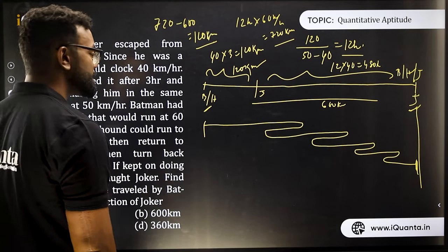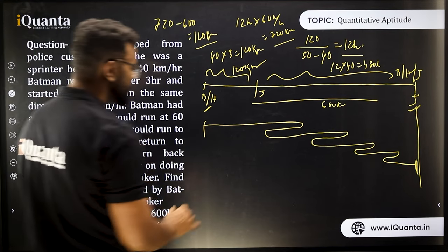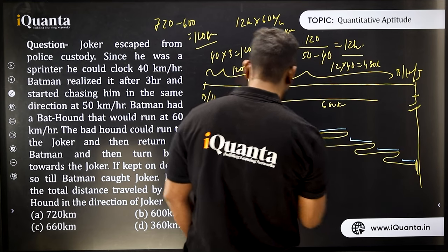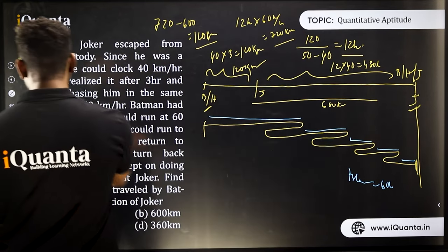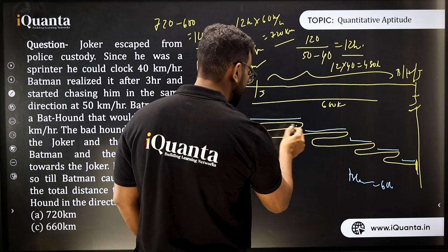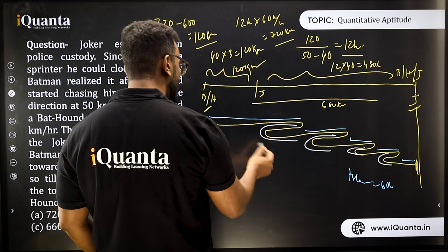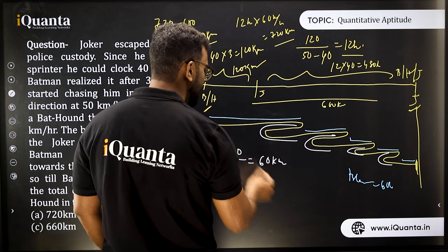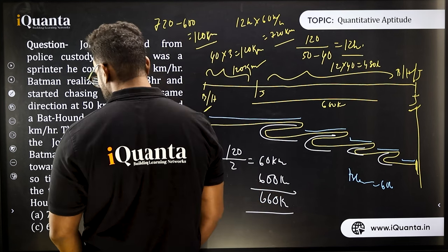Now let's analyze the remaining 120 km. The blue portions in the diagram represent all the forward segments of the hound, which sum to 600 km. The remaining 120 km consists of the back-and-forth segments. Each round-trip within this portion splits equally — half traveling toward Batman and half toward Joker. So out of 120 km, 60 km is toward Joker. Therefore, the total distance the hound travels toward Joker is 600 + 60 = 660 km. The answer is 660 km.